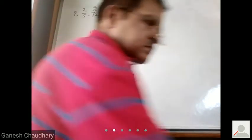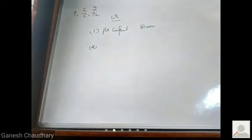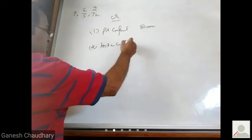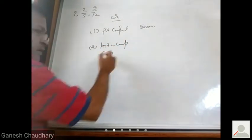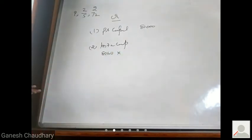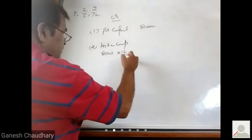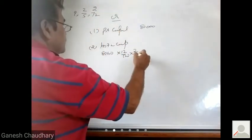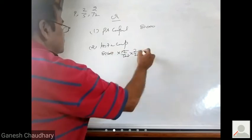Next is interest on capital, second point. Interest on capital: 80,000 into rate 12% into period. Period is 2 by 12, equals 1600.